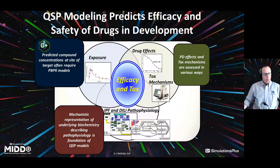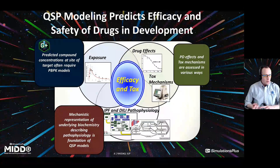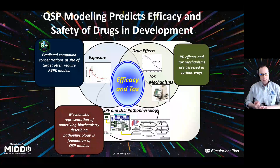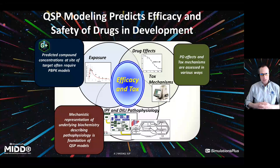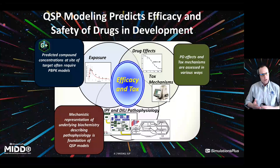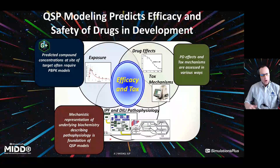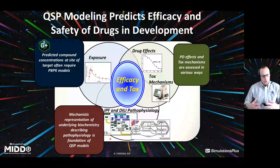There are three key elements associated with both quantitative systems pharmacology — which is efficacy or drug effectiveness focused — and quantitative systems toxicology — which is focused on safety and toxicity predictions. I'll use those terms QSP and QST pretty much interchangeably. The three key elements really start with the fundamental mathematical representation of a particular disease state or area of interest.